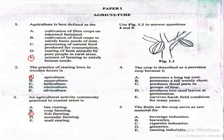Question 4. Use figure 1.1 to answer questions 4 and 5. The crop is described as a perennial crop because it: A. Possesses a long taproot, B. Possesses a tall woody shoot, C. Produces floral parts in groups of four, D. Produces two seed leaves at germination, E. Survives harsh field condition for many years. Perennial crops live for multiple years and keep producing, surviving various environmental challenges over time.